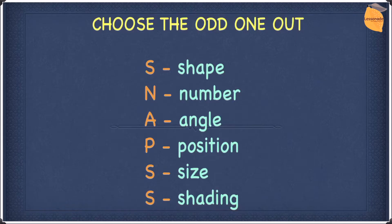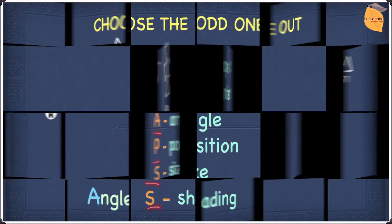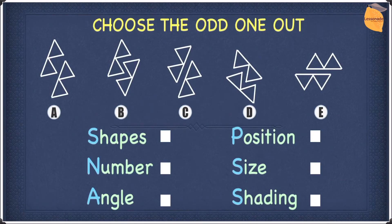Since we now know what SNAPS is, let's look at our first example. So let's look at this example. In this example, we have five options.